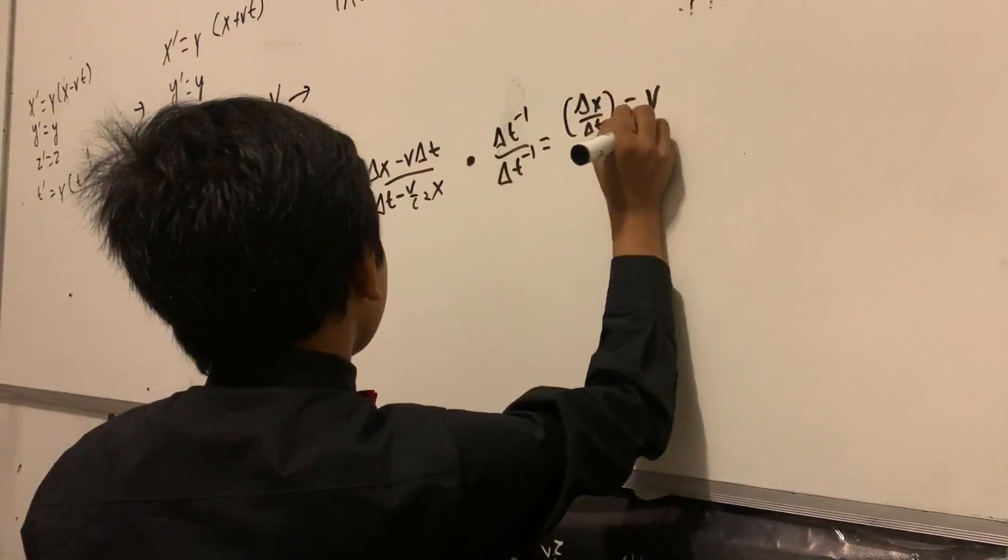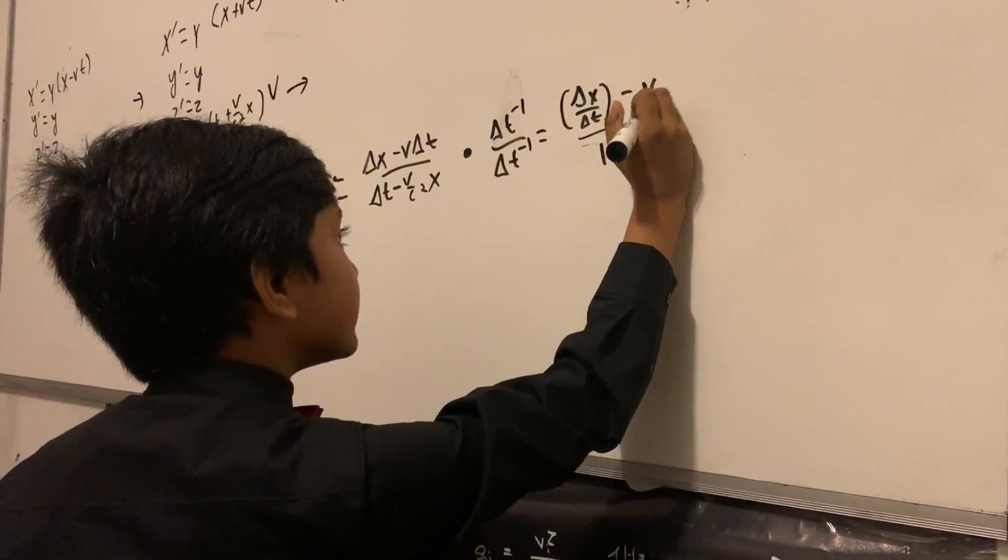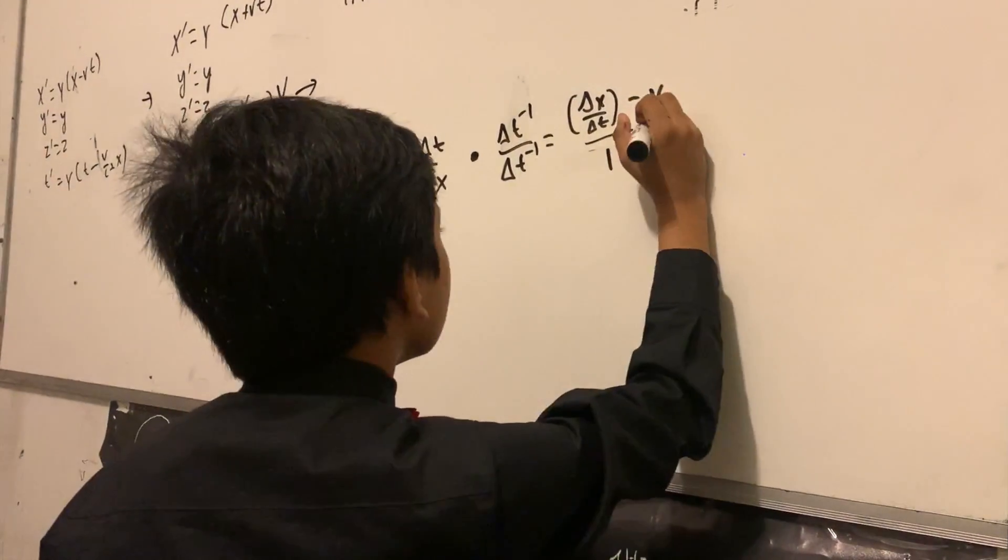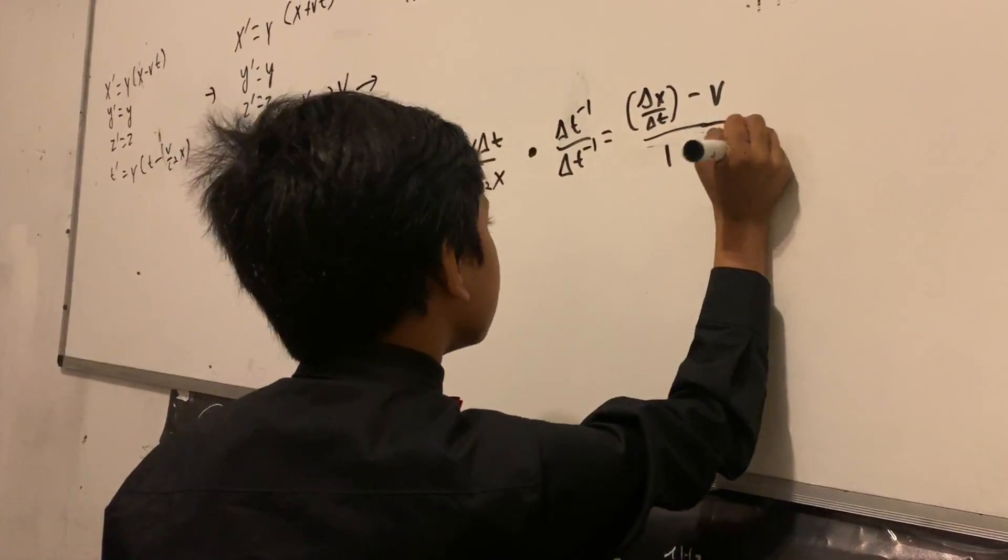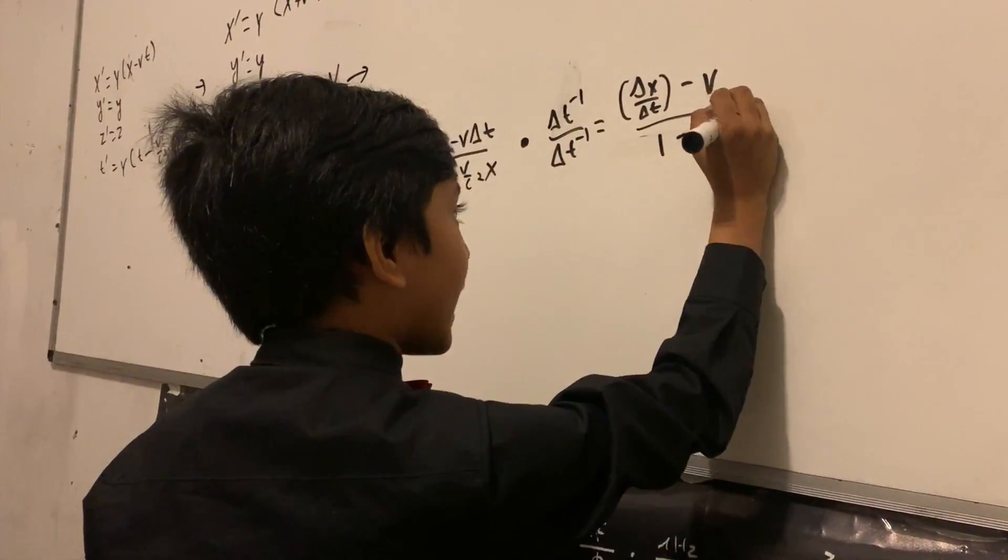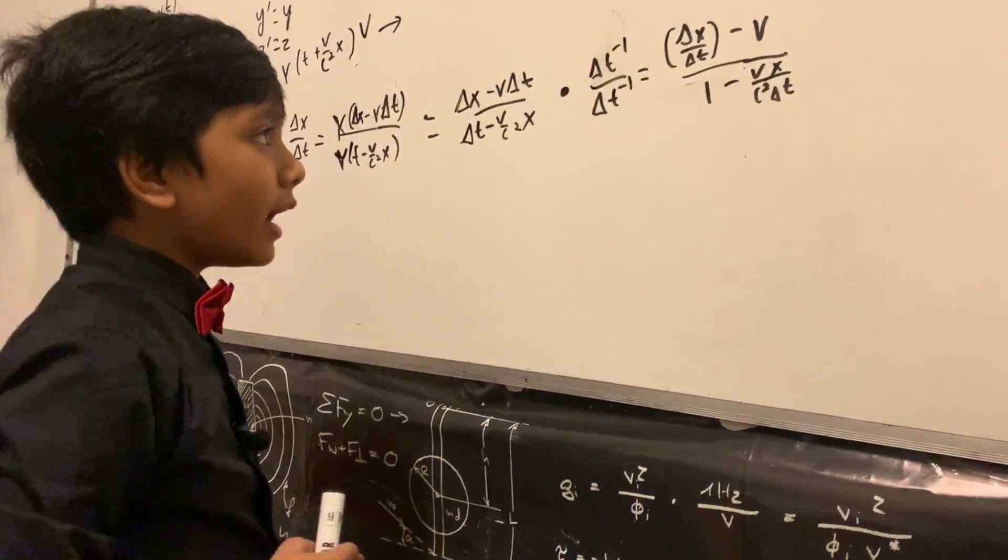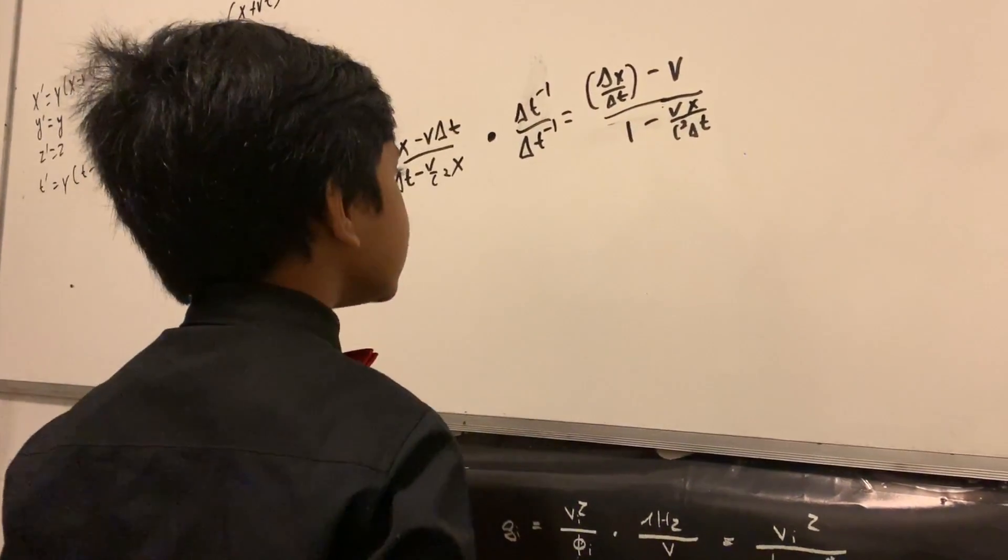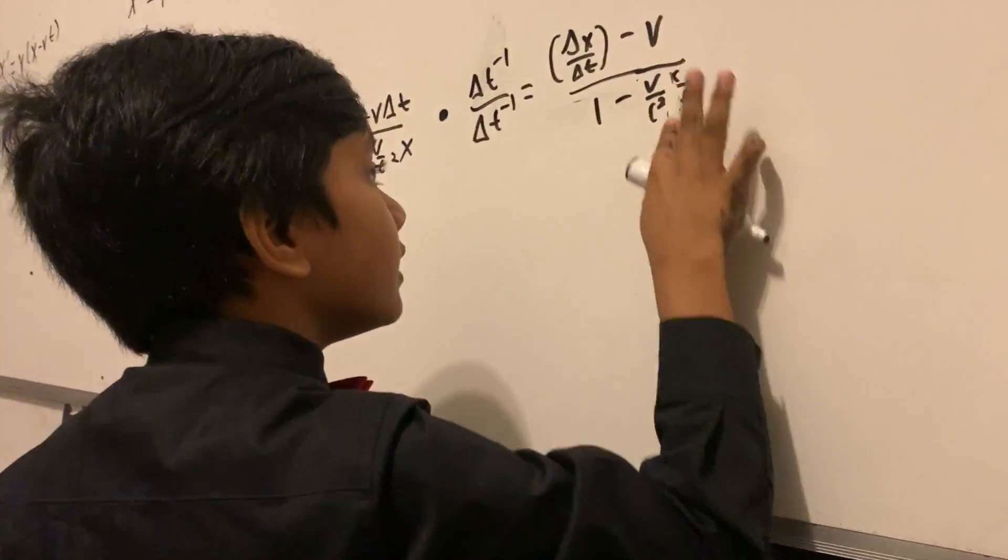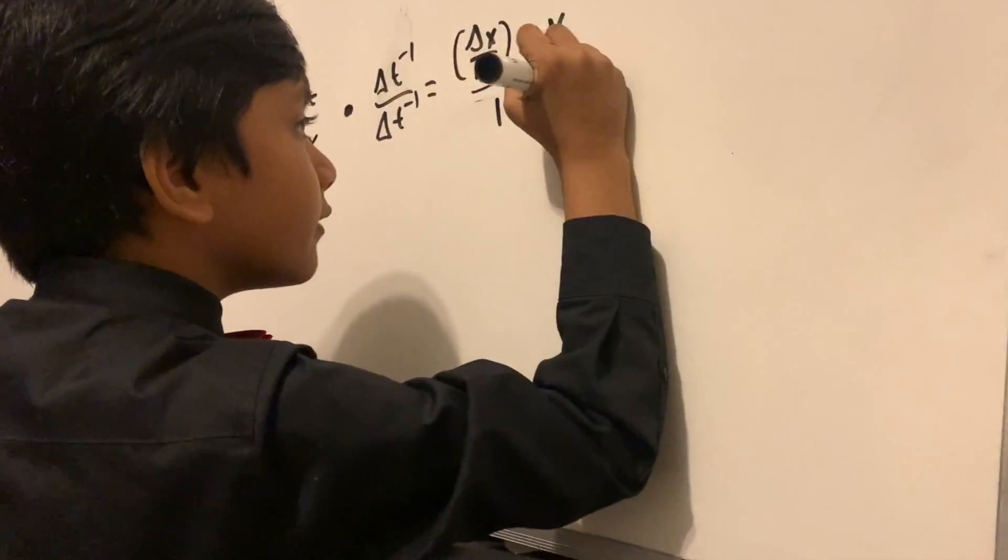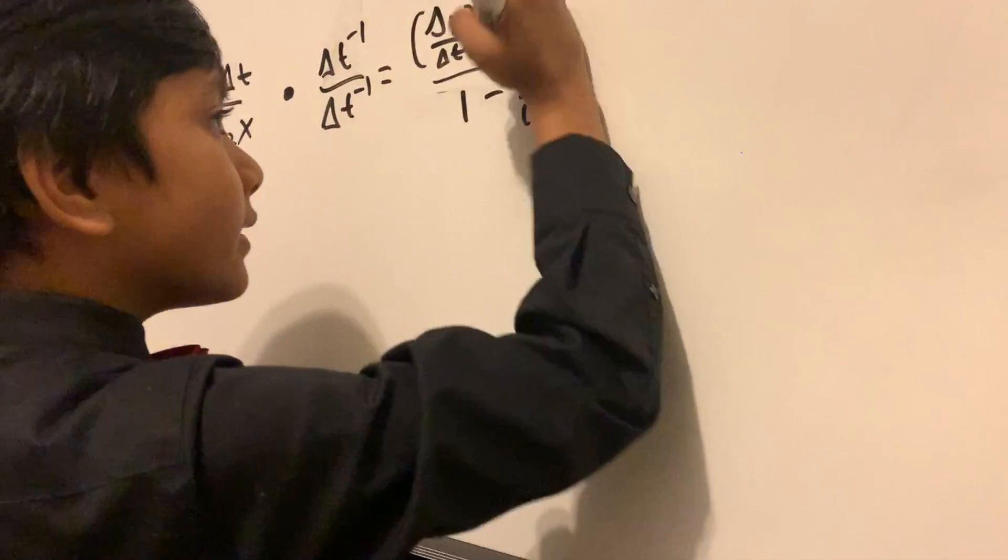Now that gives us delta x over delta t minus v over one minus v over c squared times delta x over c squared delta t. And if you look closely, you can actually split this up into v over c squared times delta x over delta t.